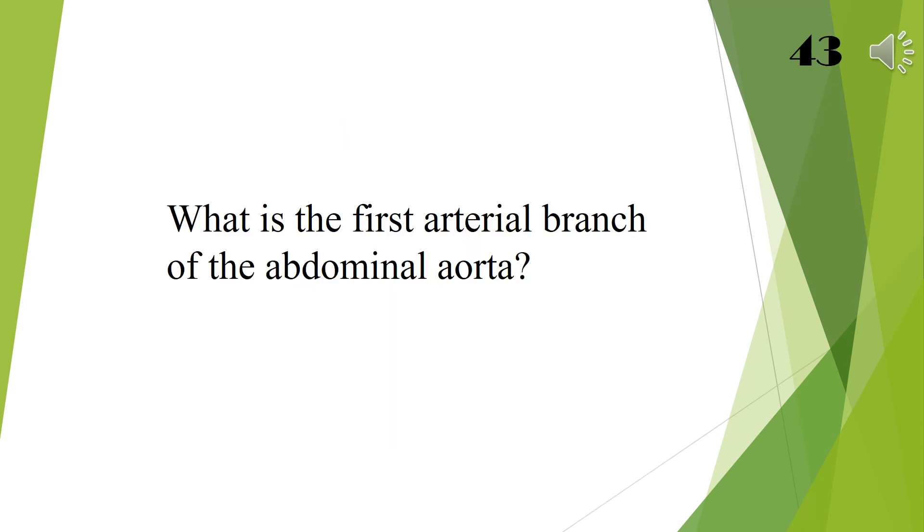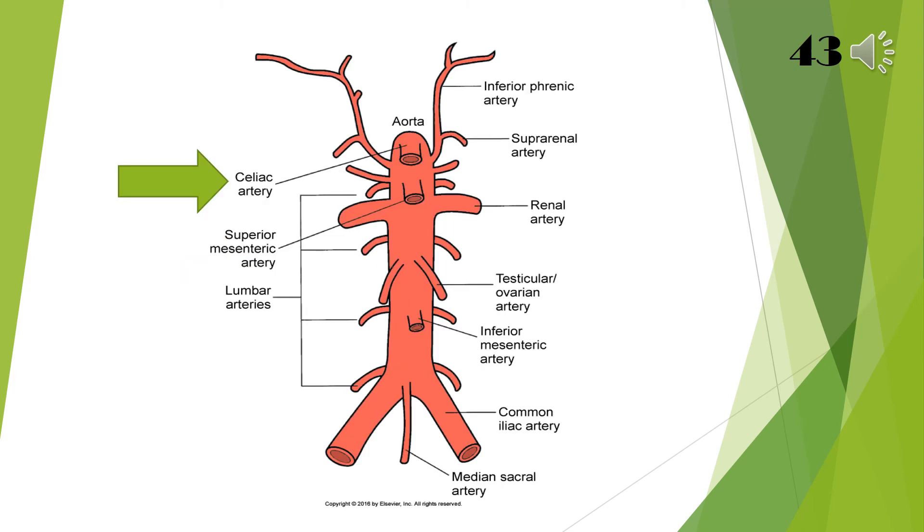What is the first arterial branch of the abdominal aorta? The answer is celiac artery.